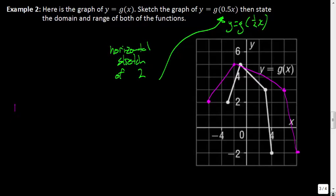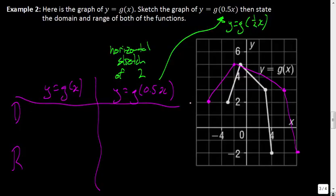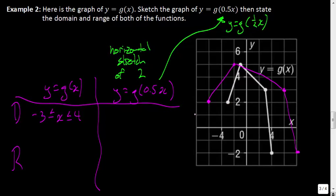Finally, let's deal with domain and range. We have our original function y = g(x) and our new function y = g(0.5x). This graph clearly does not go infinitely left and right. The most positive x value is 4, and the most negative is negative 3. So x must be between negative 3 and 4 inclusive. The domain has changed — it's been multiplied by a factor of 2. This point at 4 should be at 8, and it is. The point at negative 3 is now at negative 6.